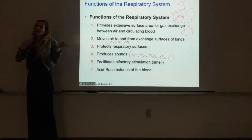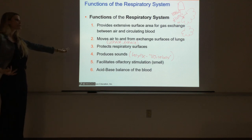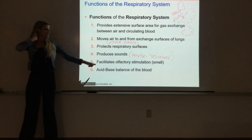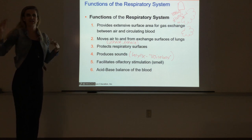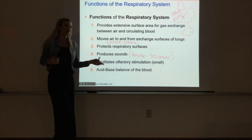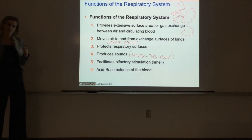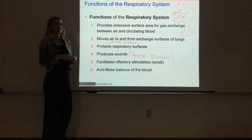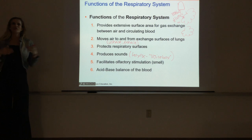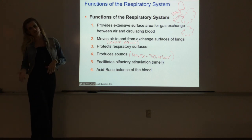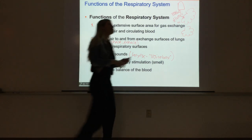We bring air in, we have gas exchange occur, we produce sound, we smell, and we protect all of these delicate surfaces. Finally, the respiratory system is extremely important in maintaining the pH of our blood. Our blood has a buffer system to keep pH at about 7.35 to 7.45, and that buffer system's reaction utilizes CO2. So we can alter our breathing to alter the amount of CO2 we have, to directly alter the pH of our bloodstream.